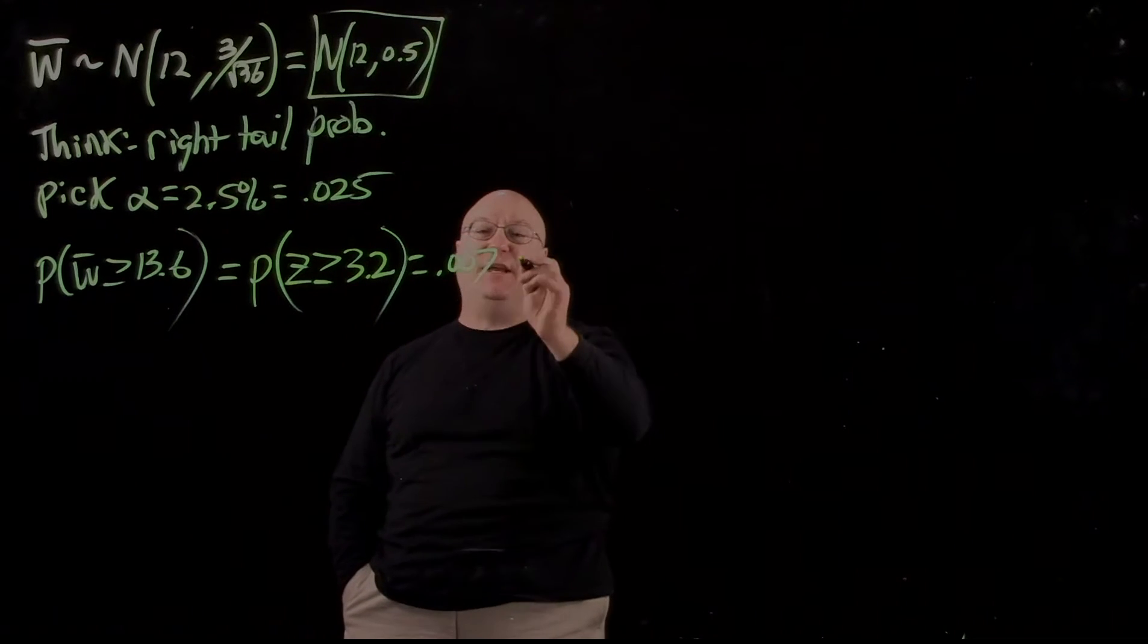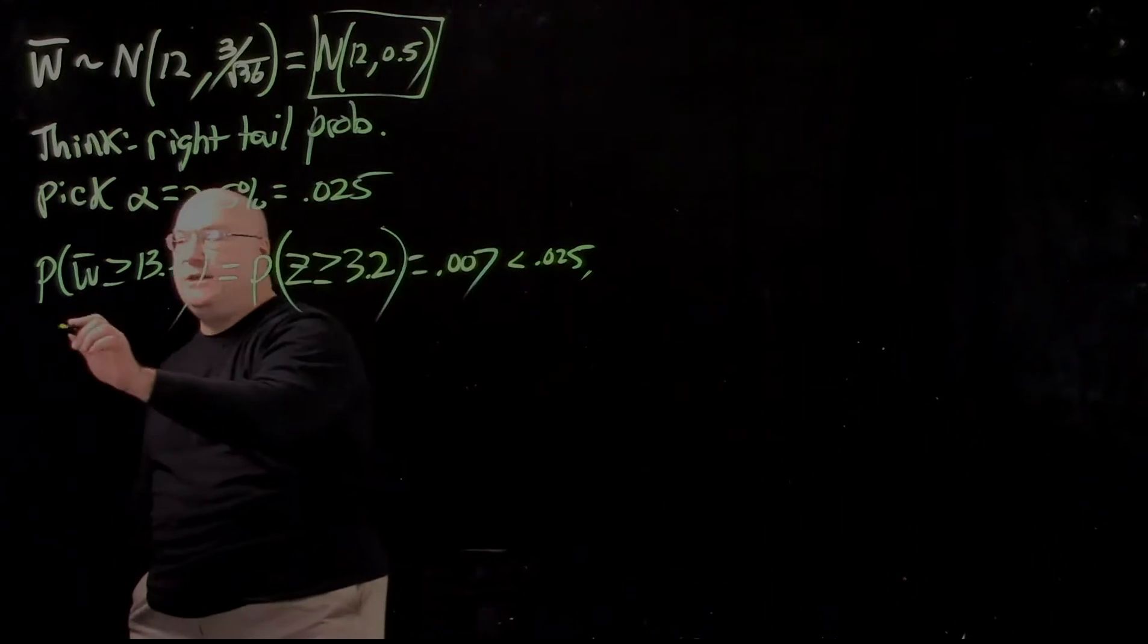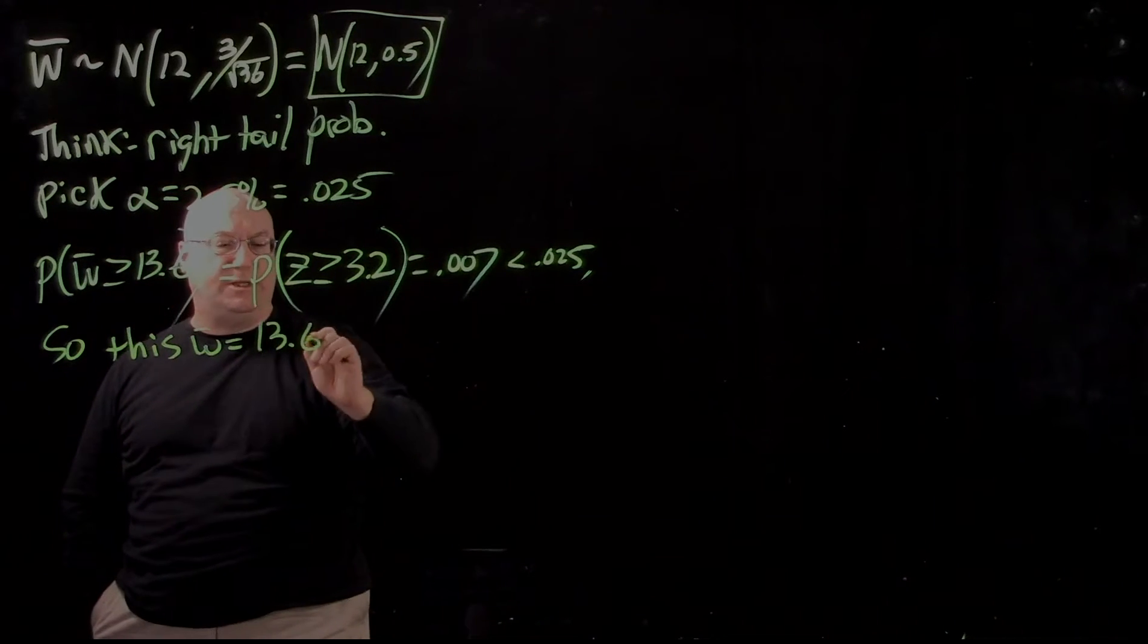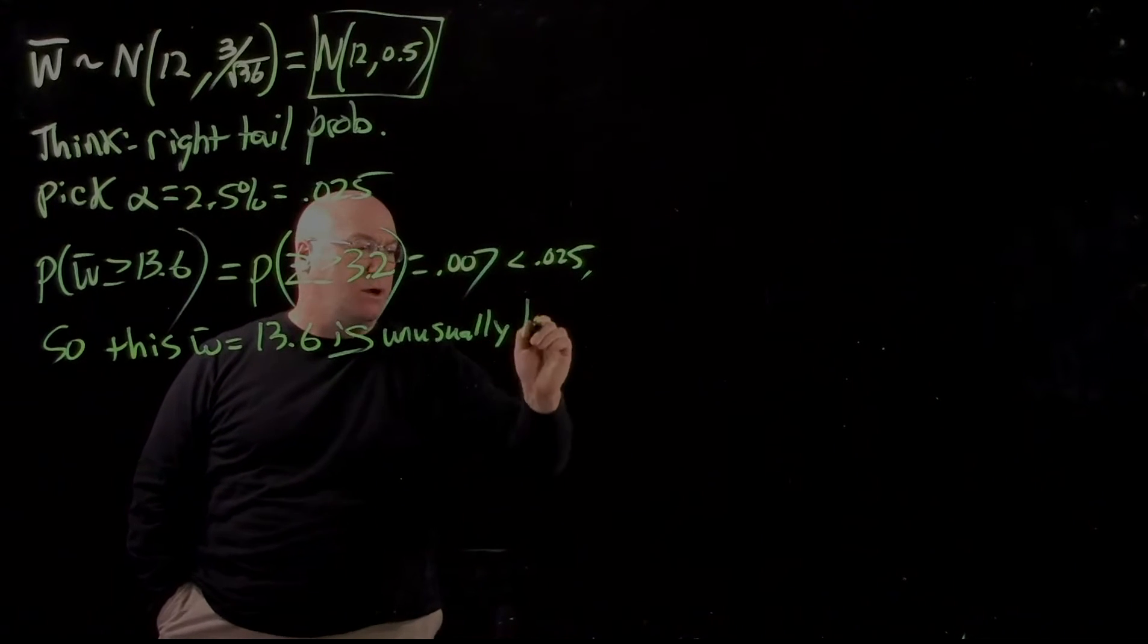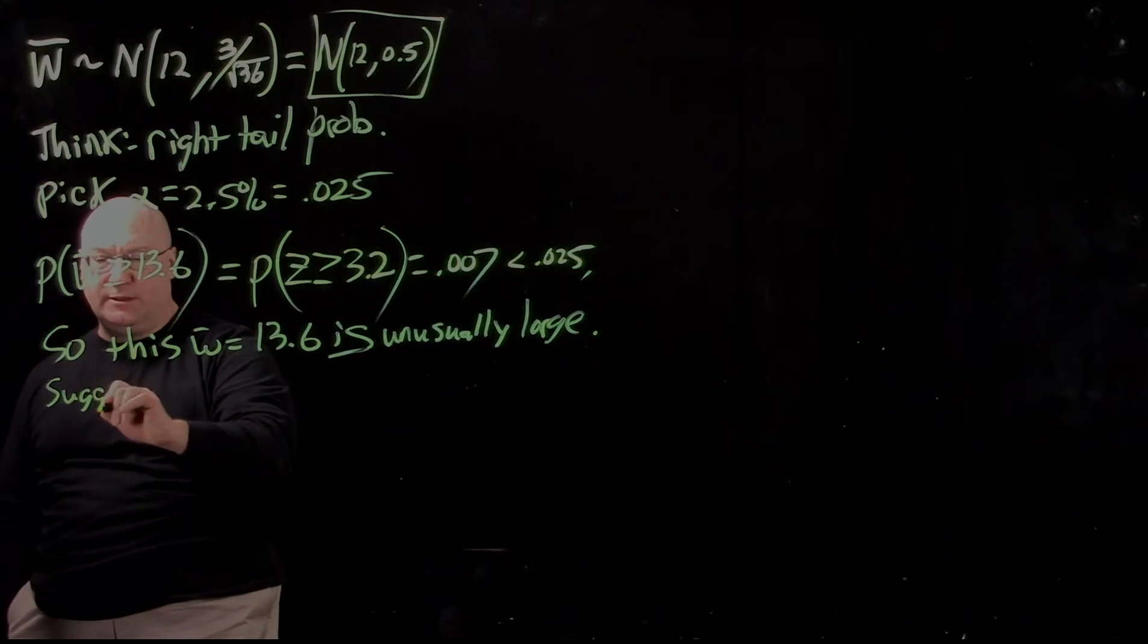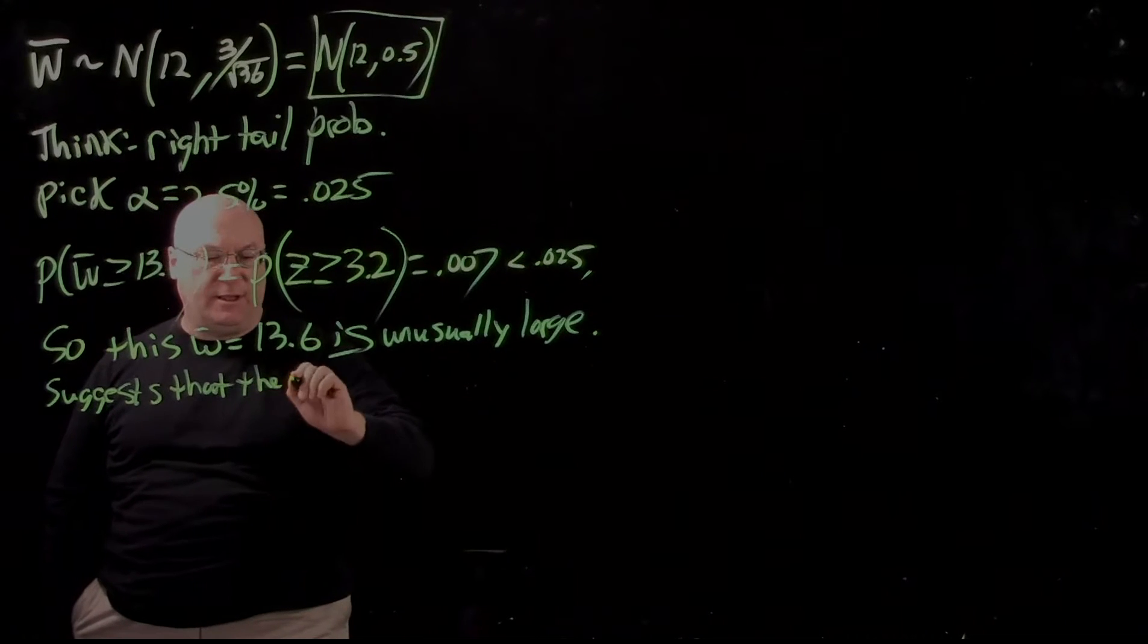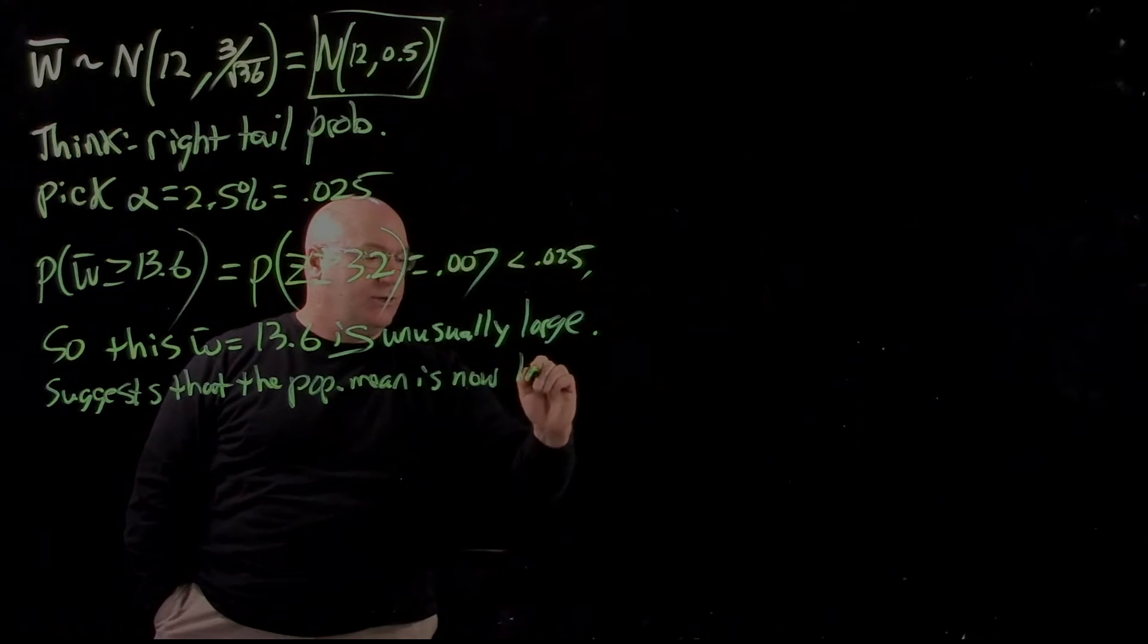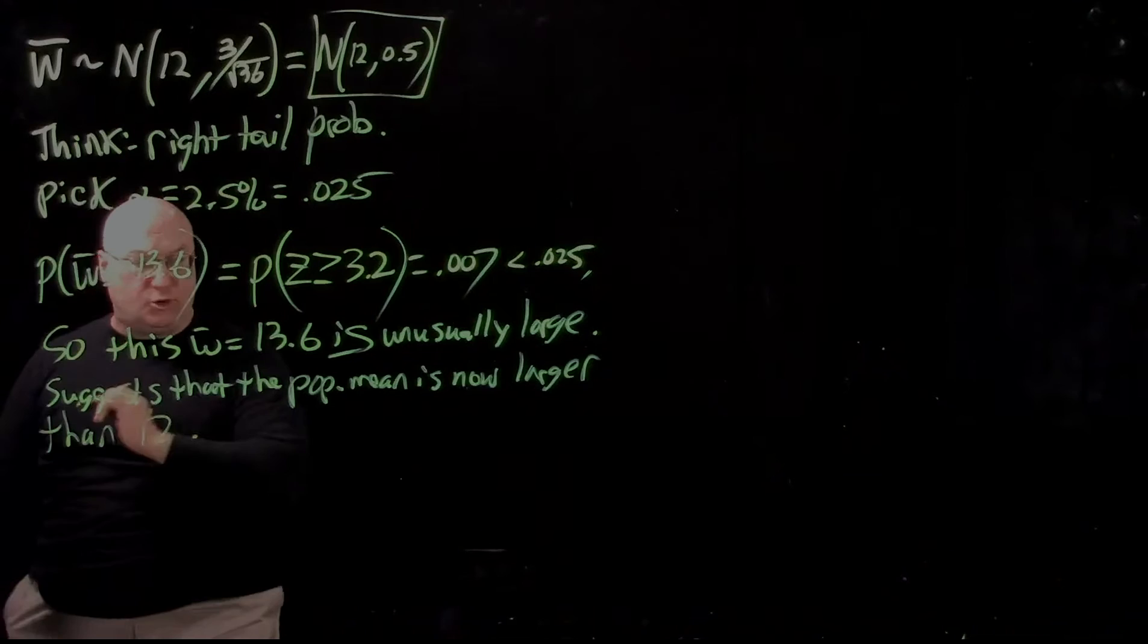And that is definitely less than 0.025. So the conclusion is, this W bar equal to 13.6 is unusually large. It suggests that the population mean is now larger than 12.